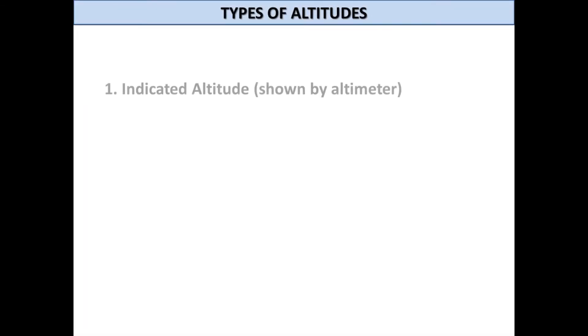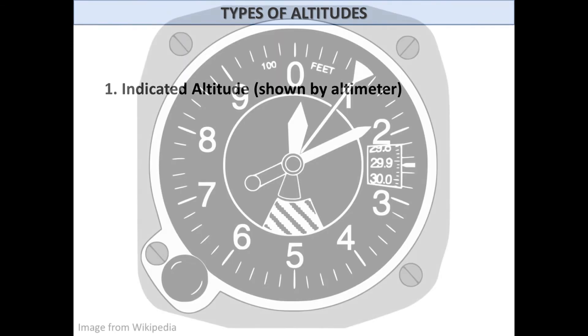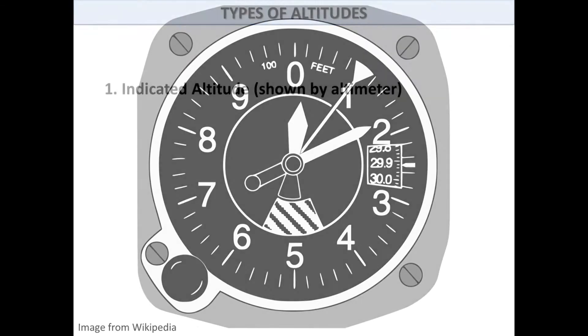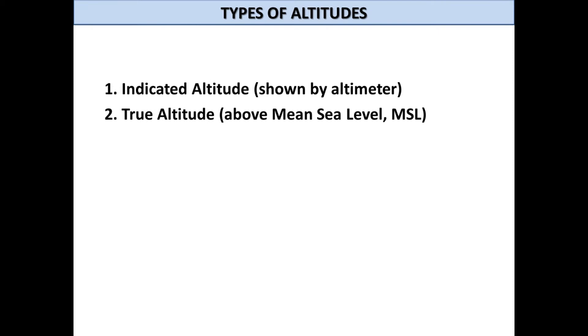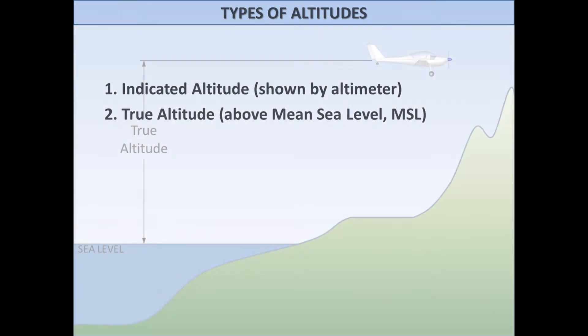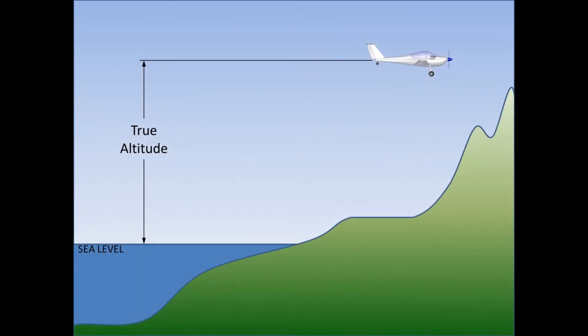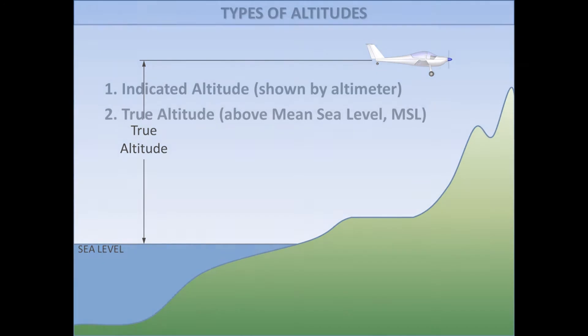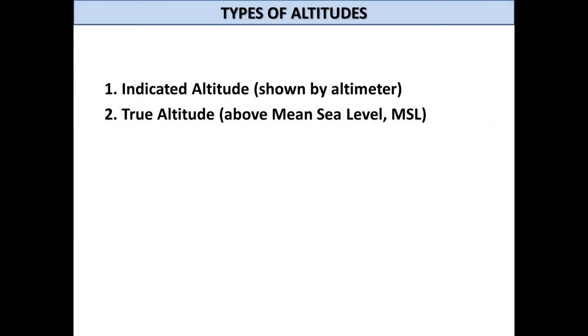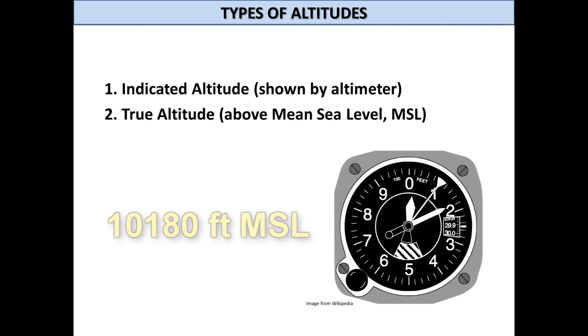In this context, we now have to concern ourselves with five kinds of altitudes. Indicated altitude is what is shown by the altimeter in the airplane as discussed before. True altitude is the actual vertical distance between the aircraft and sea level, often expressed as feet or meters above mean sea level. True altitudes are typically followed by MSL; for instance, 10,180 feet MSL.